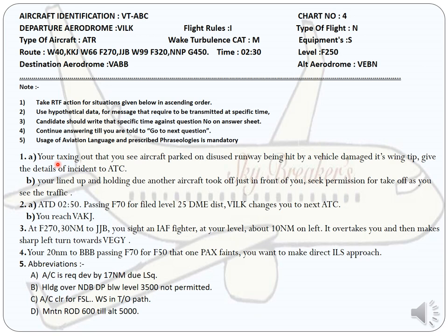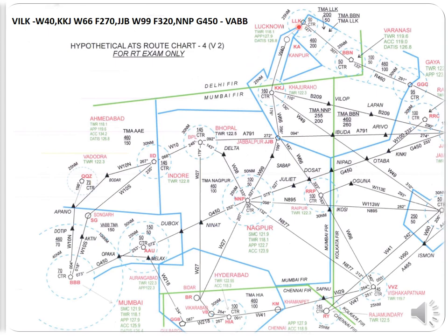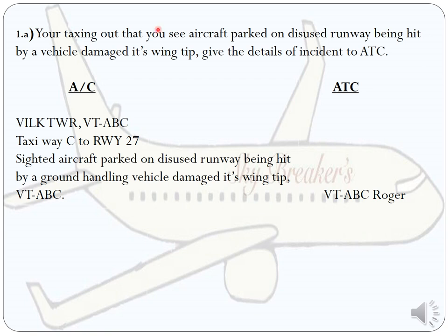The four Ws are: first W — to whom you are calling; second W — who are you; third W — where are you; fourth W — what do you want. In this case you are taxiing out at Lucknow. Lucknow has tower and approach; ground is not available. When the aircraft is maneuvering on the ground up to Flight Level 50, the tower handles it. Above FL50 to FL200, approach takes over. So you need to contact the tower.